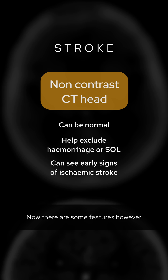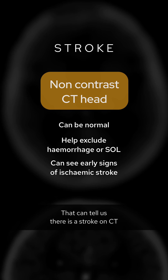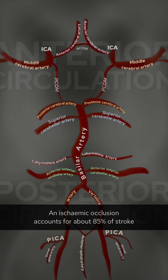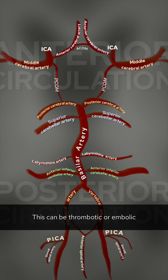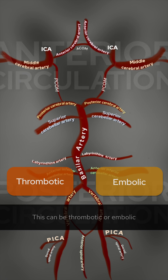Now there are some features that can tell us there is a stroke on CT in the first few hours. An ischemic occlusion accounts for about 85% of strokes. This can be thrombotic or embolic.